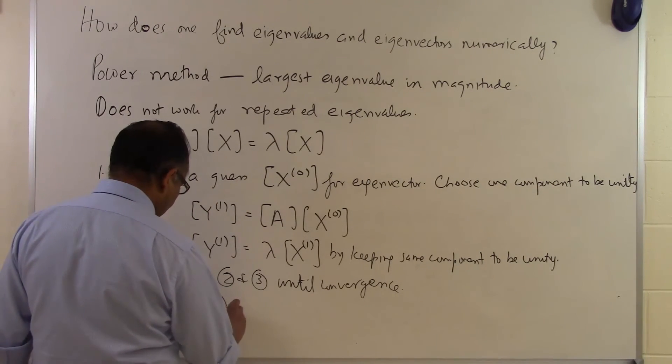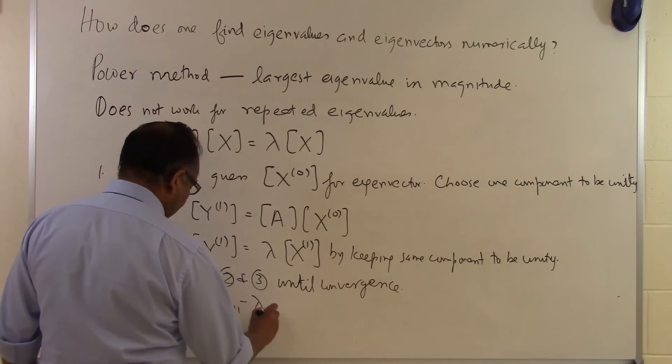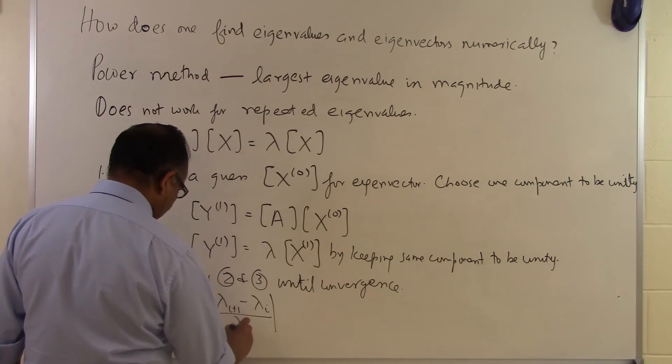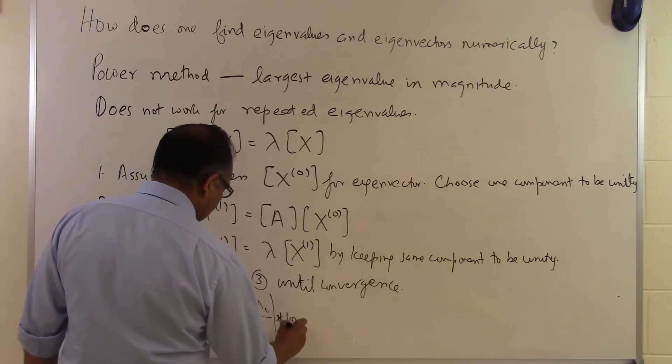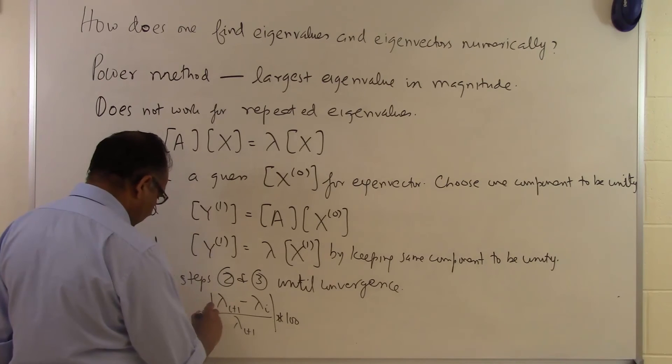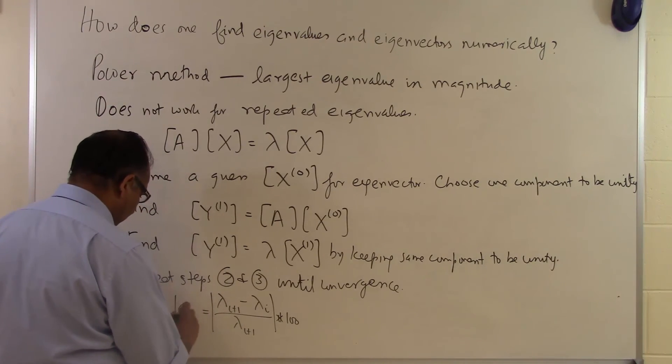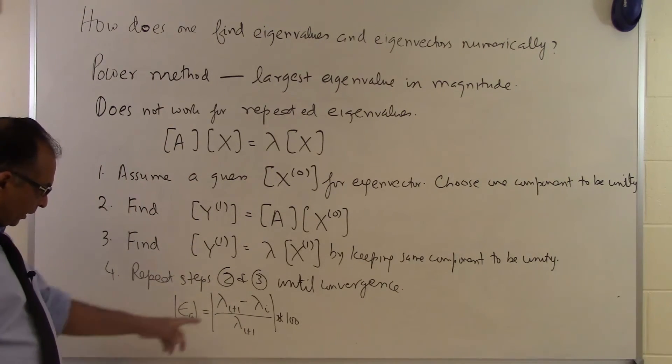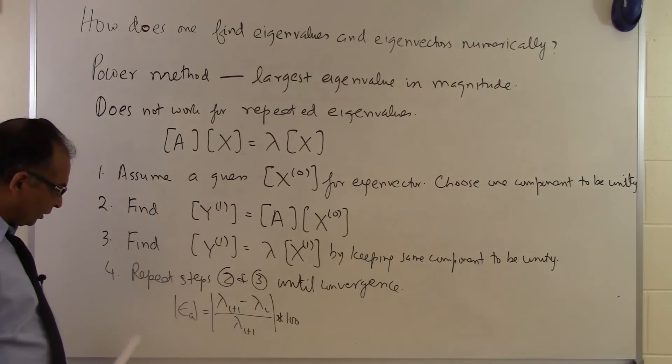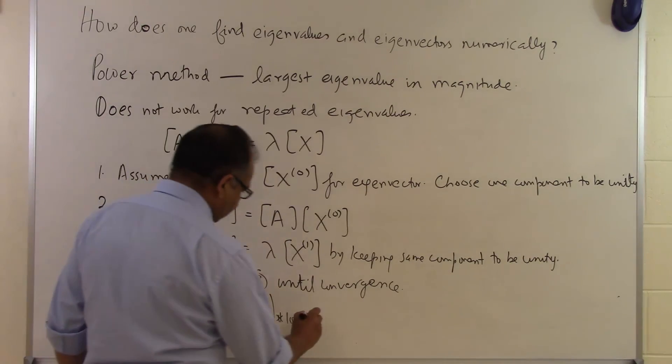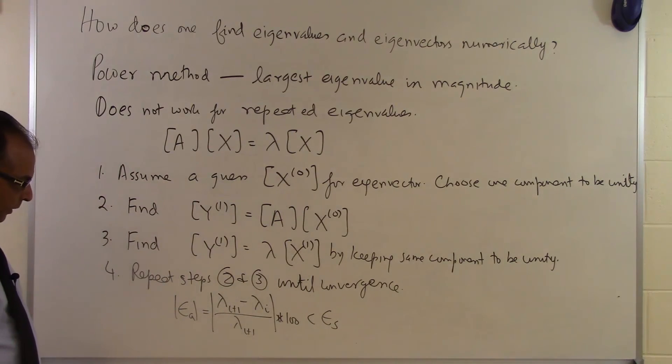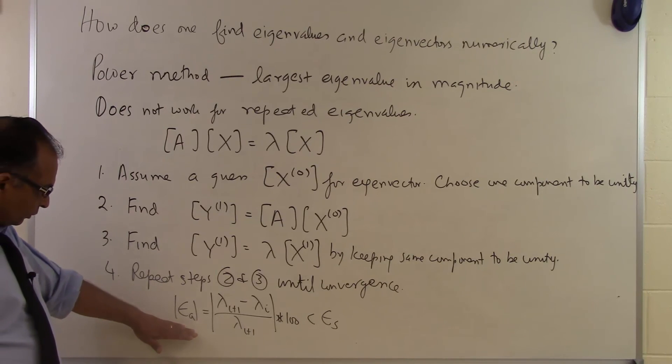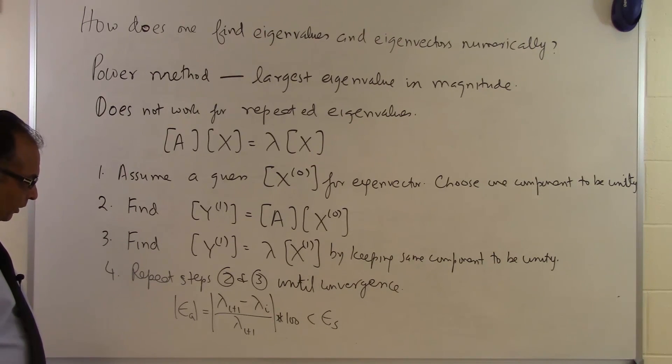You check for convergence by calculating: current value minus previous value for λ, divided by the current value, times 100. This gives you the absolute relative approximate error between the current approximation and the previous approximation. Then you check whether it's less than the pre-specified tolerance. You might have specified a tolerance of 0.5% or 0.25%. Based on that, you'll use that as your stopping criteria.